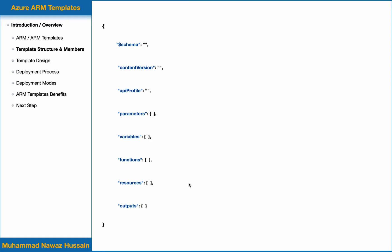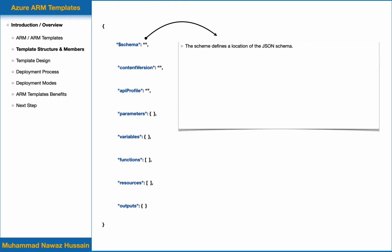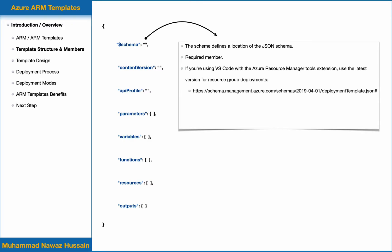The first member is schema. The schema defines the location of the JSON schema file — it is a required member, so you always have to include it in your ARM template. If you are using VS Code with the Azure Resource Manager Tools extension, you can use the latest version found at a specific address. Other editors, including Visual Studio, may not be able to process this schema.